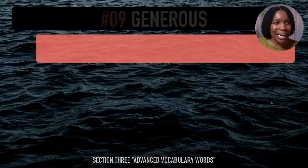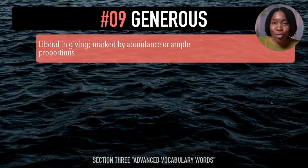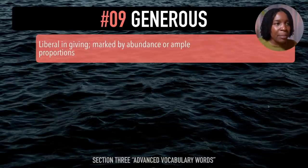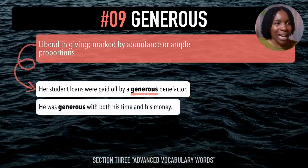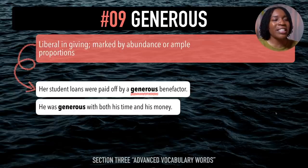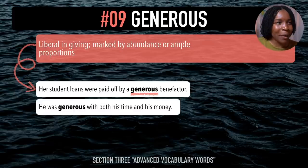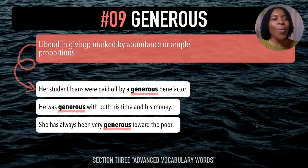The next word is 'generous' — with the 'juh' right at the beginning. After me — generous. This means liberal in giving, or marked by abundance or ample proportions. Example sentences: Her student loans were paid off by a generous benefactor. He was generous with both his time and his money. She has always been very generous toward the poor. Last time — generous.